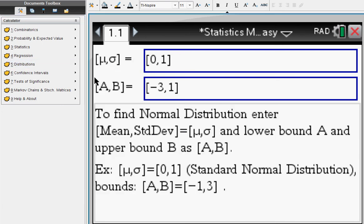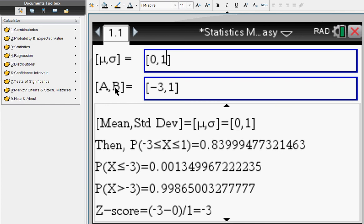Let's look at normal distribution. You enter the mean and the standard deviation, 0 and 1, the standard normal distribution. And here you enter values a and b.